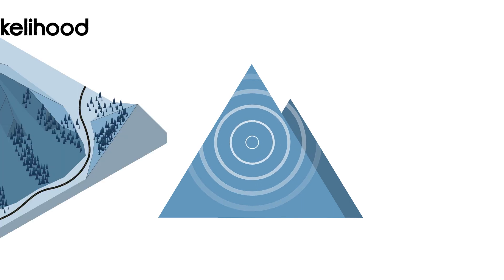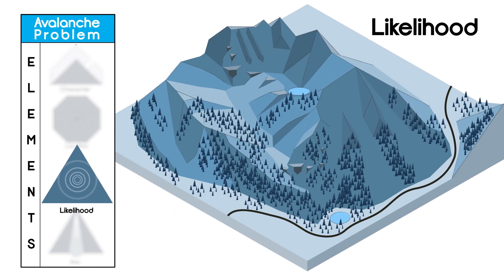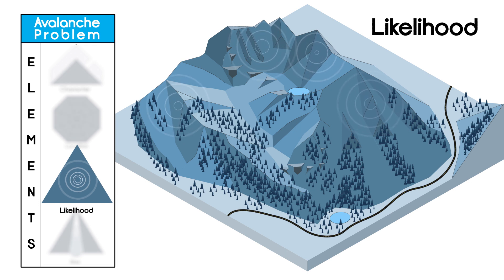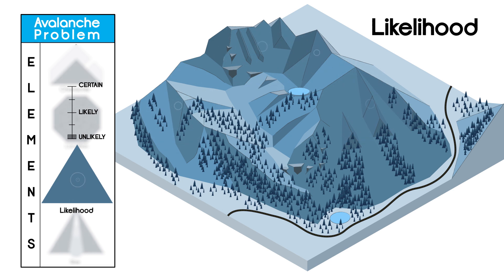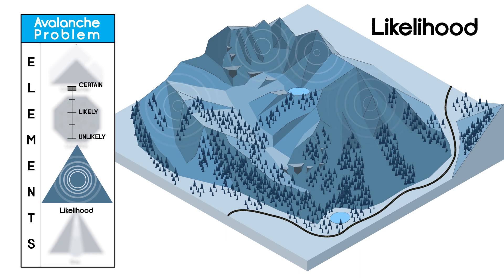The chance of triggering an avalanche, or likelihood, varies day-to-day and sometimes hour-to-hour. Likelihood is visualized here with the size and frequency of rings — bigger, more frequent rings equals a higher likelihood of a human-triggered avalanche. It is described using terms such as unlikely, likely, or certain. The term applied reflects the highest likelihood the forecaster expects on that day.